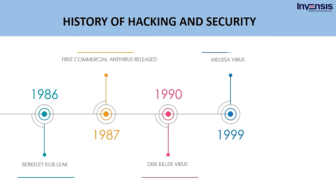In 1999, the Melissa virus, a macro virus, was circulated as an email attachment that, when opened, disabled a number of safeguards in Microsoft Word 97 or Word 2000. If the user had Microsoft Outlook, the virus would be recirculated to the first 50 people in each of the user's email address books. The Melissa virus had the potential to disable corporate mail servers and caused Microsoft Corporation to shut down its incoming email.